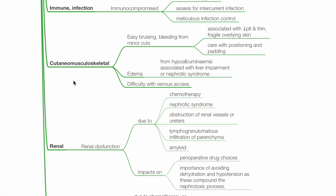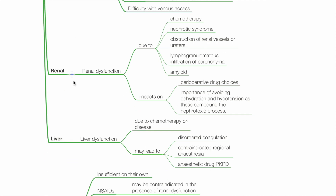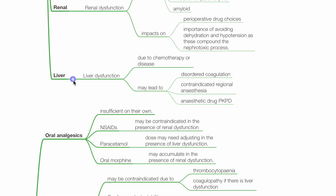Edema from hypoalbuminemia associated with liver impairment or nephrotic syndrome may be present. Difficulty with venous access should be anticipated. Renal dysfunction may occur due to chemotherapy, nephrotic syndrome, obstruction of renal vessels or ureters, lymphogranulomatous infiltration of parenchyma, or amyloid — this impacts perioperative drug choices. Dehydration and hypotension should be avoided to prevent acute kidney injury. Liver dysfunction due to chemotherapy or disease may lead to disordered coagulation, contraindication of regional anesthesia, and altered anesthetic drug pharmacokinetics and pharmacodynamics.